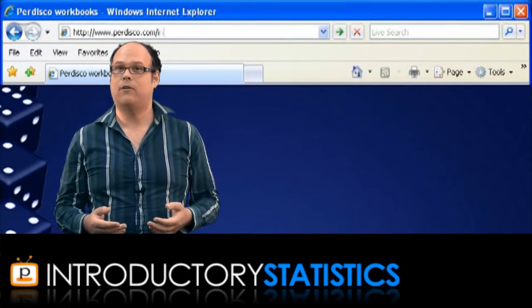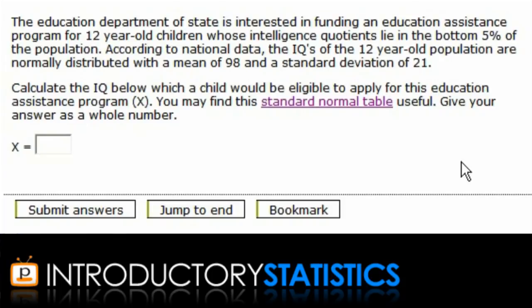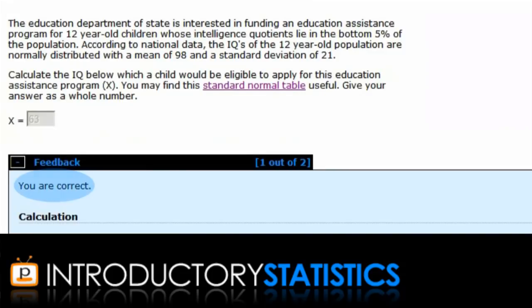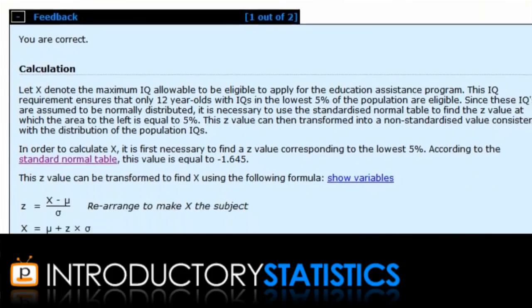In this question, an education department is considering providing an assistance program for students with an IQ in the bottom 5% of the population. You're told that these IQs follow a normal distribution with mean 98 and standard deviation of 21. You're being asked to calculate the cut-off IQ that would make a student eligible for the assistance program. This question can be answered by using the transformation formula and the standard normal table, which I did earlier, so if you put the answer in, you can see we get personalized feedback and an explanation of the question.